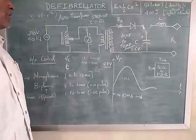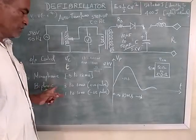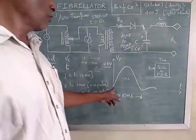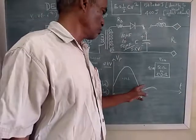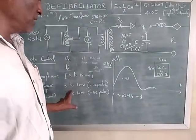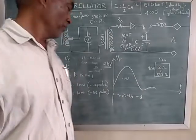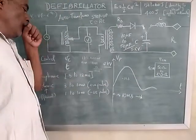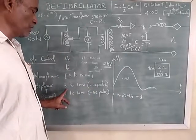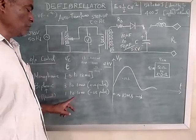So we have two types of defibrillator applications. One is monophasic. For this, 3 to 12 millisecond is the time. This can go from 3 millisecond to 12 millisecond. We have biphasic. In biphasic, we have positive pulse as well as negative pulse. So biphasic, if it is a positive pulse, it goes for 3 to 10 millisecond. If it is a negative pulse, it goes for 1 to 10 millisecond.